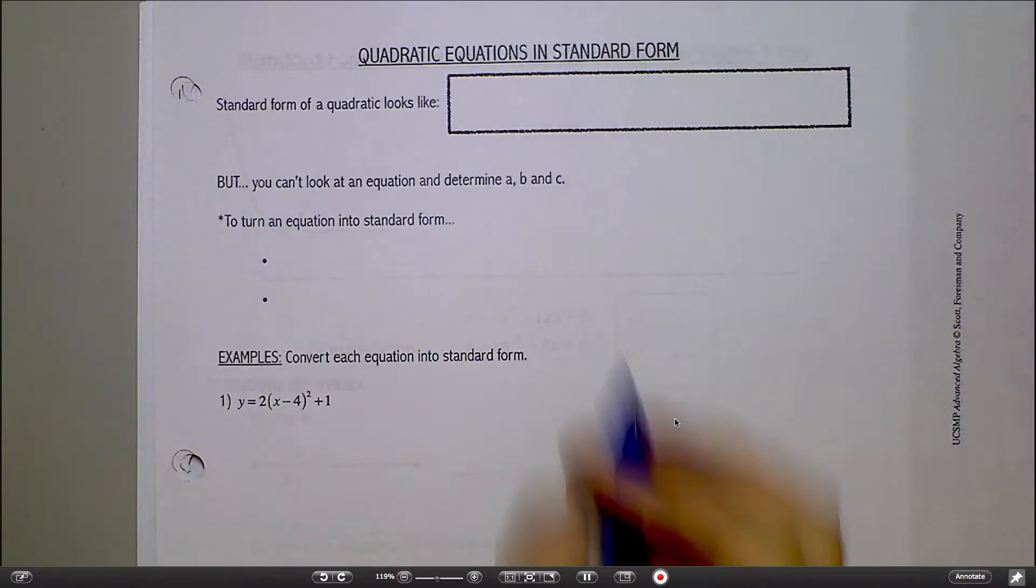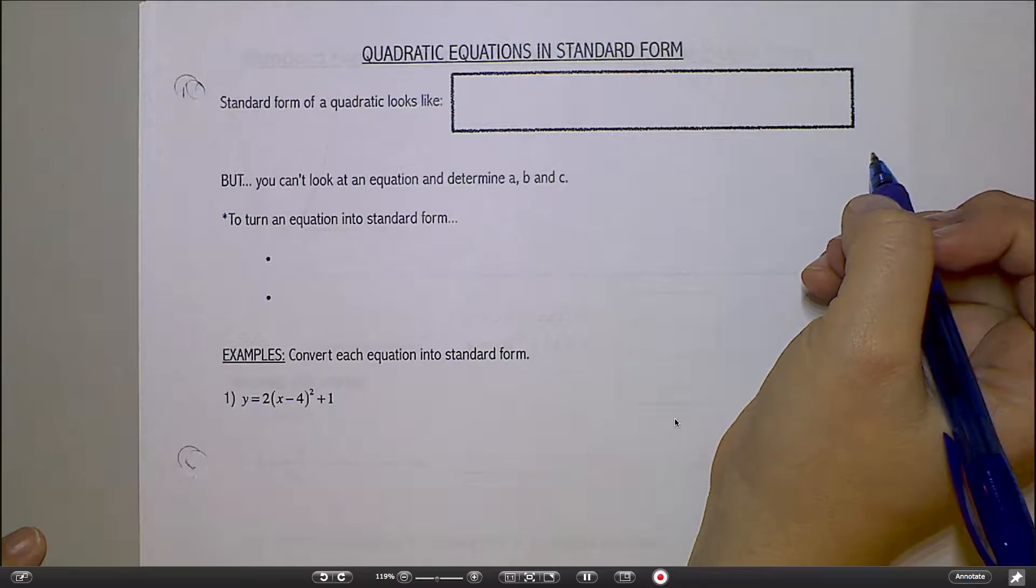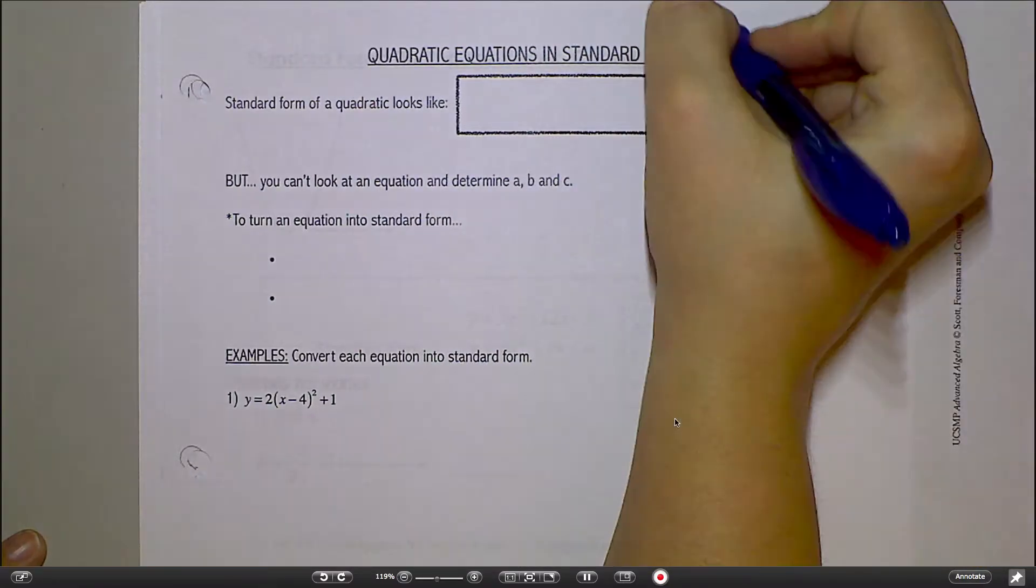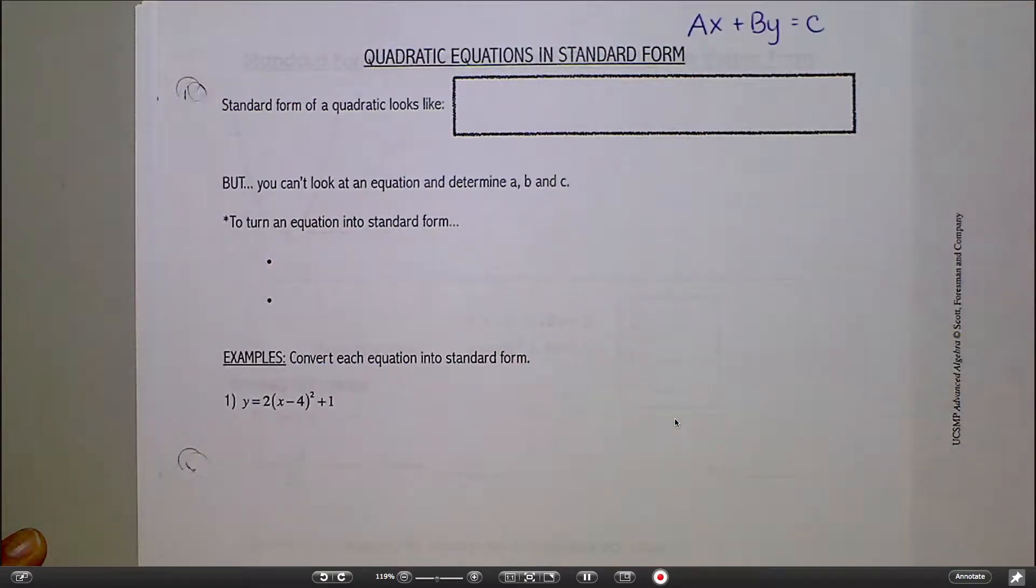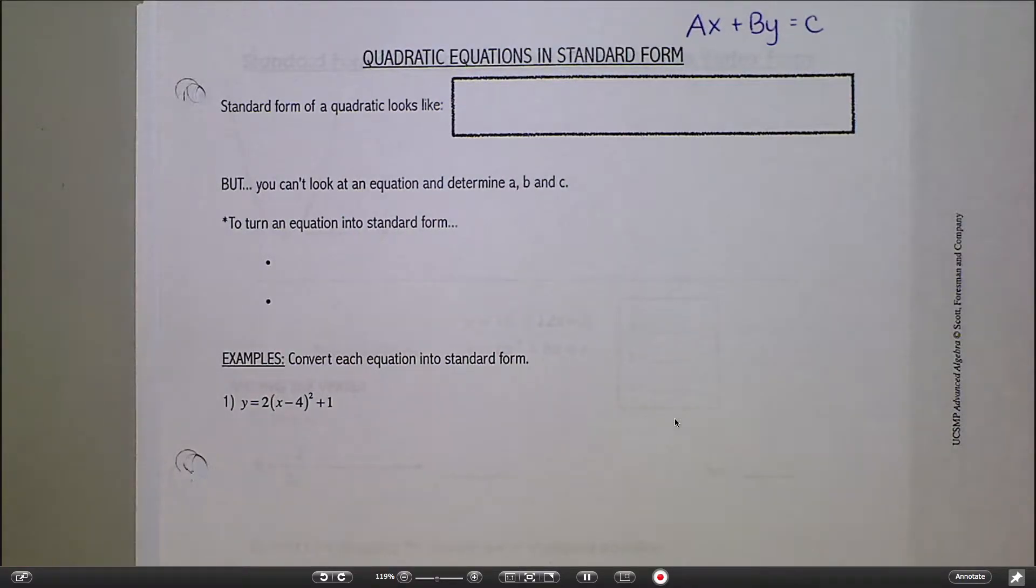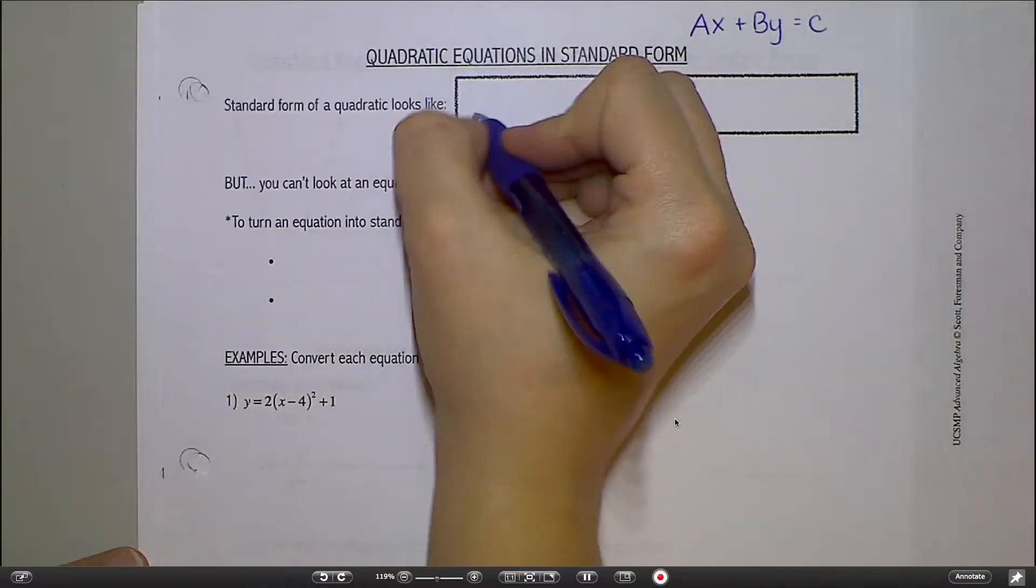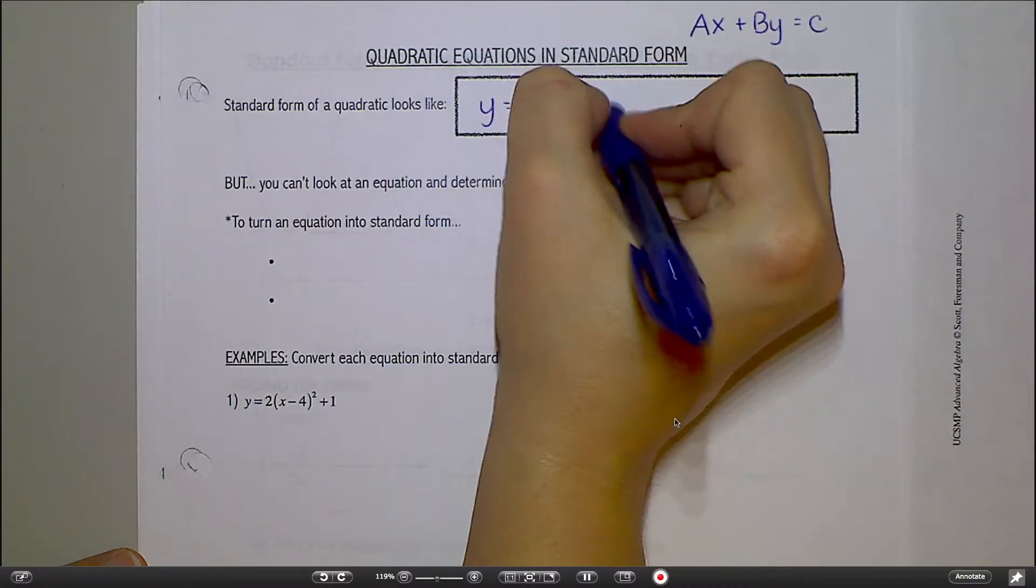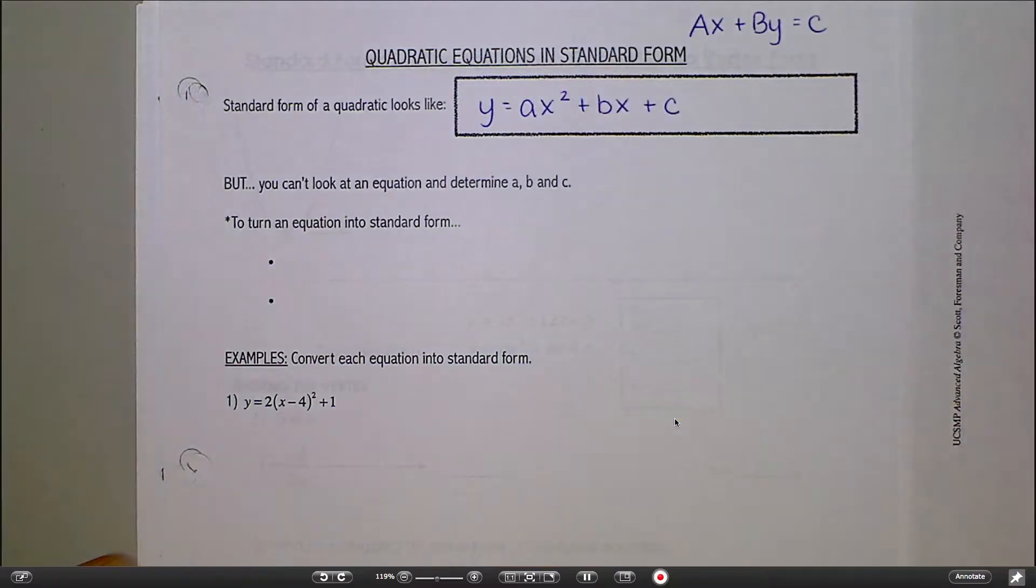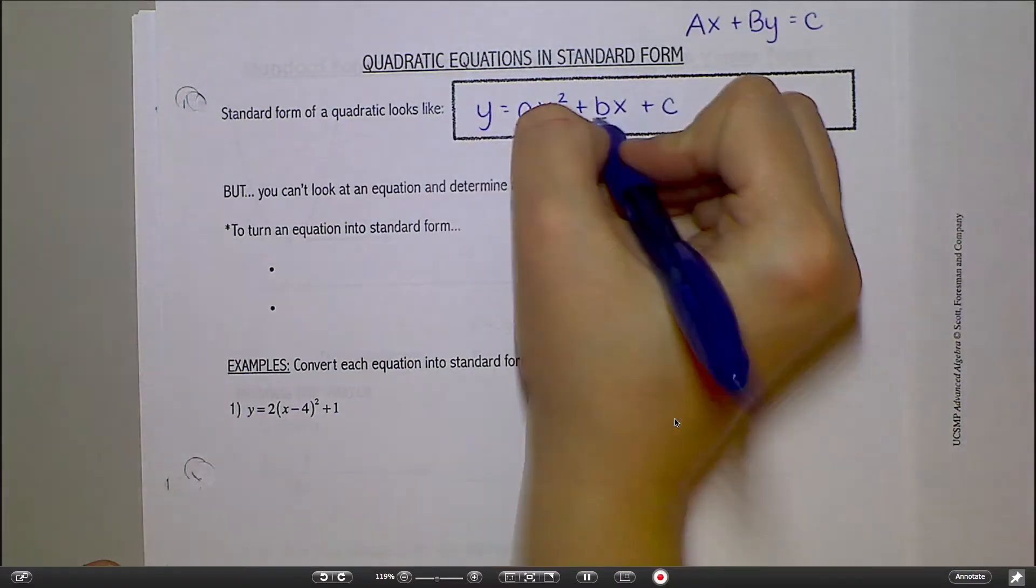You may remember when we talked about linear equations, we had a standard form for linear equations, and it looked like this: AX plus BY equals C. Does that look familiar? Do you remember us talking about that? A little bit at least? Remember that when we wrote it in that form, A, B, and C were actually numbers, so it may have been something like 3X plus 4Y equals 12.